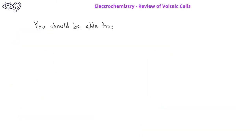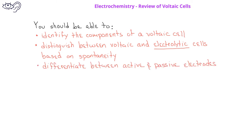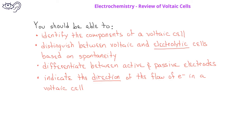After watching this video, you should be able to identify the components of a voltaic cell. You should be able to distinguish between voltaic or galvanic electrochemical cells and electrolytic electrochemical cells in terms of the spontaneity of the chemical reactions involved. You should also be able to distinguish between active electrodes and passive electrodes. Finally, you should be able to identify the flow of electrons in a voltaic cell.